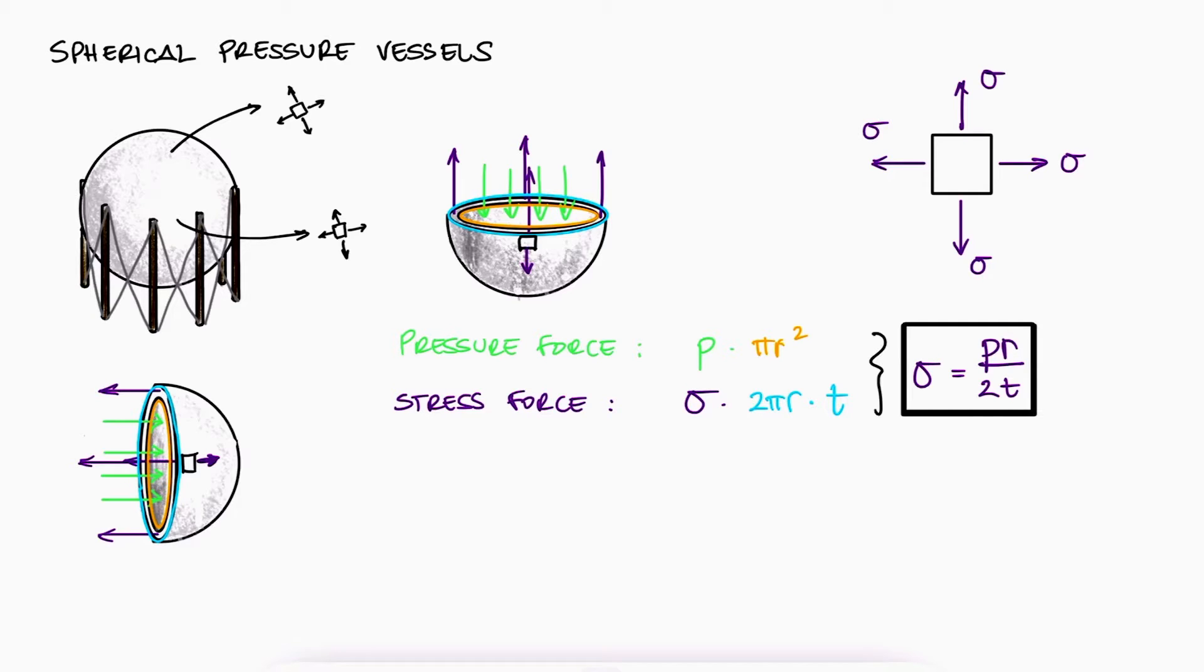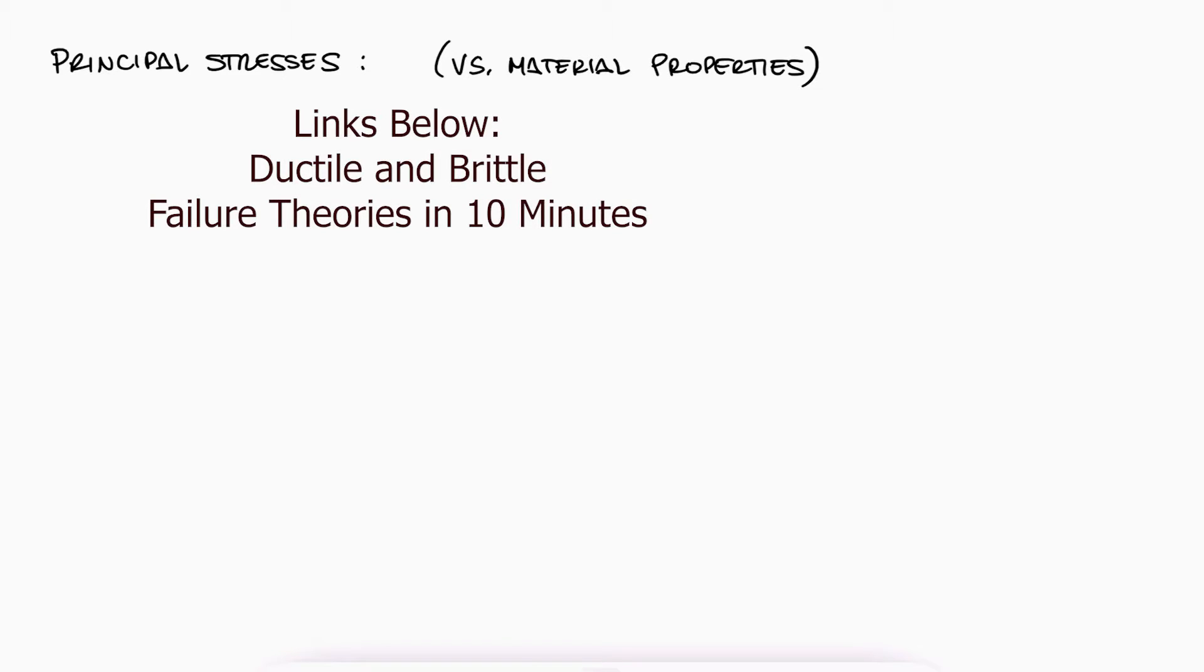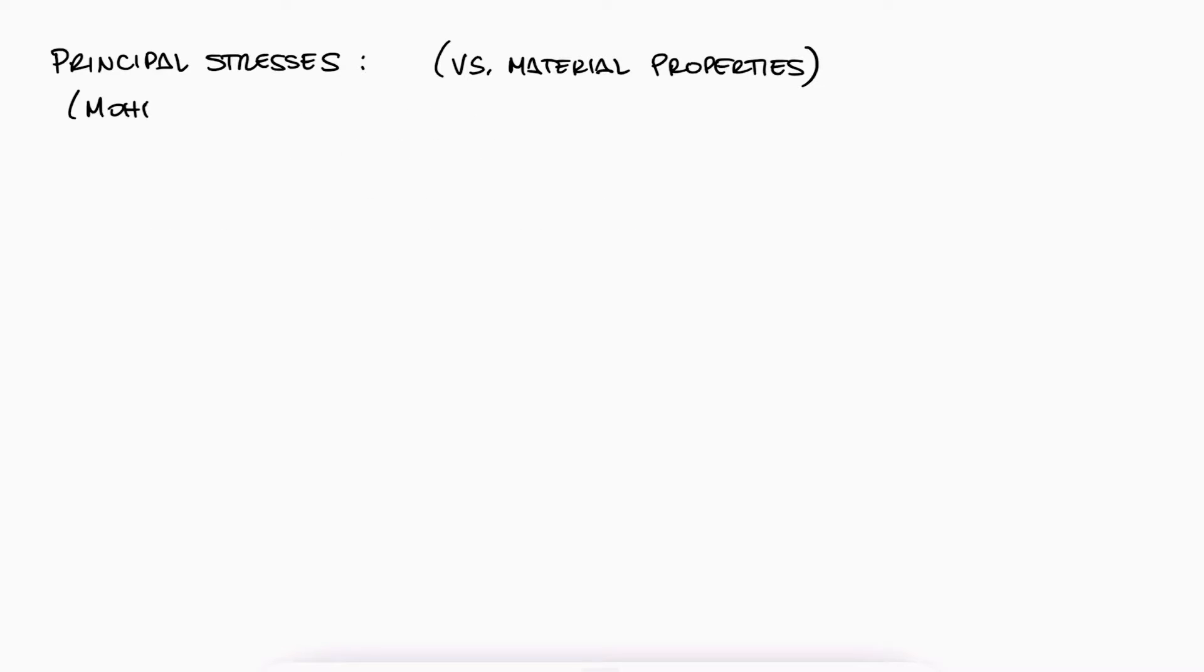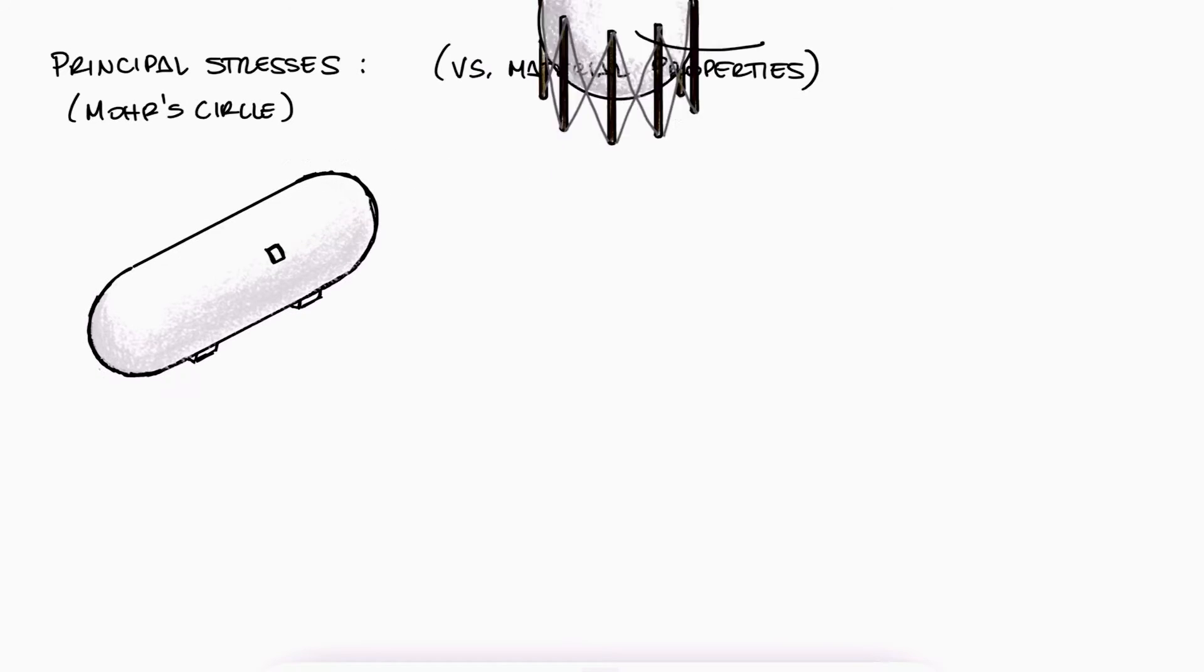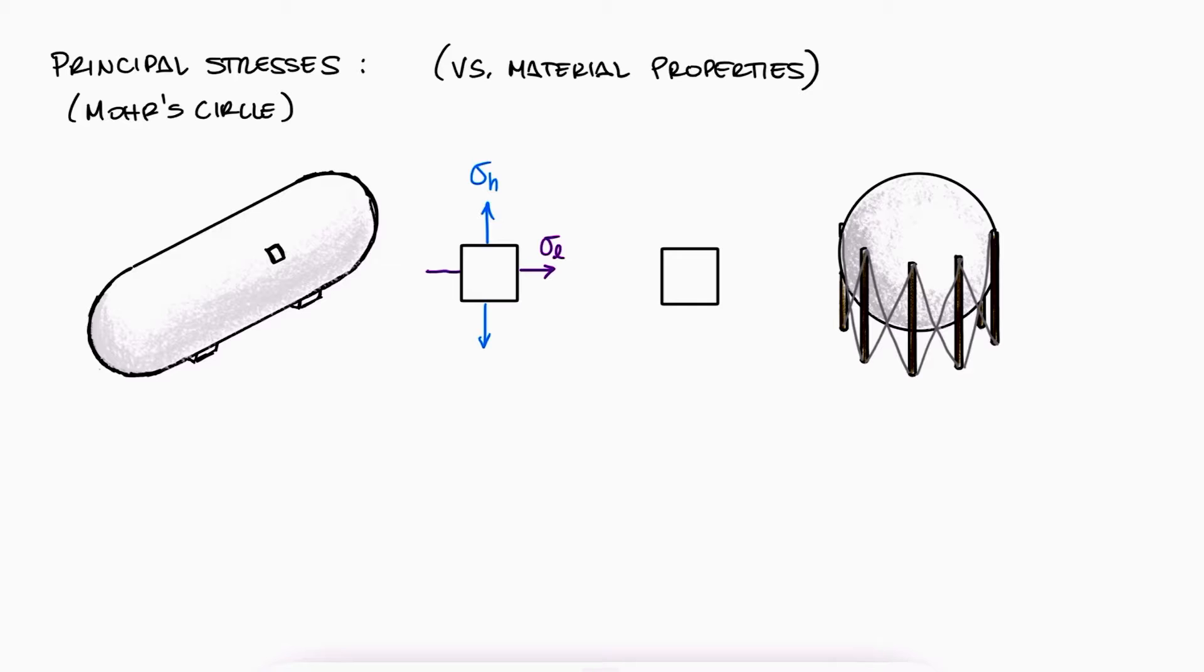Now if we're looking for the principal stresses to see when these structures will fail, and we'll learn about this comparison between principal stresses and material properties in the failure theory's video, linked in the description below, we can use what we learned during the Mohr's circle video, also linked below, to find the principal stresses and the maximum shearing stresses for both cylindrical and spherical pressure vessels.